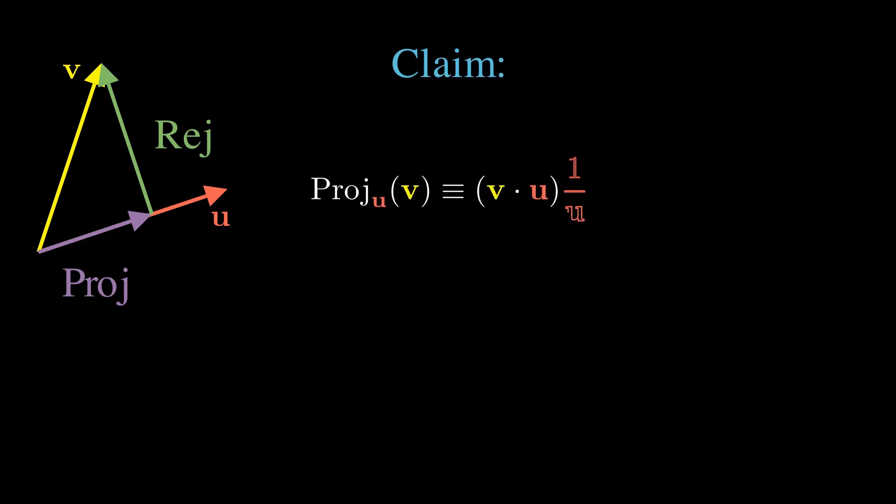Claim that the projection of v onto u is the dot product of v and u, all multiplied by u inverse, and the rejection of u from v is the wedge product of v with u multiplied by u inverse.